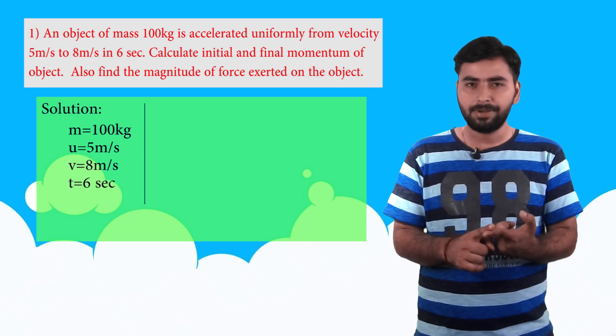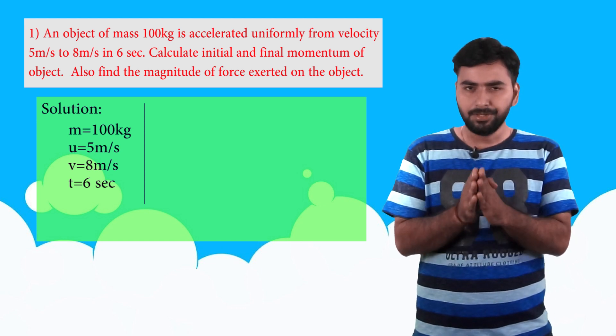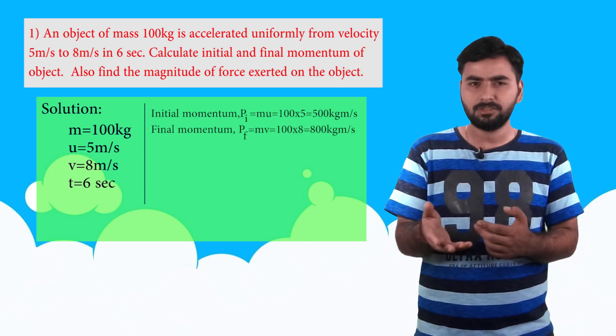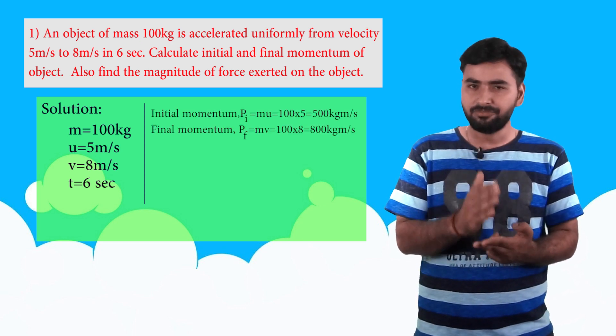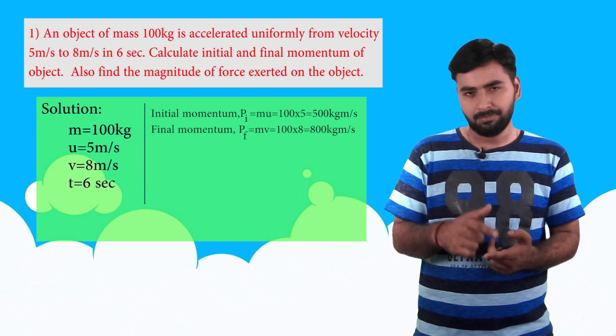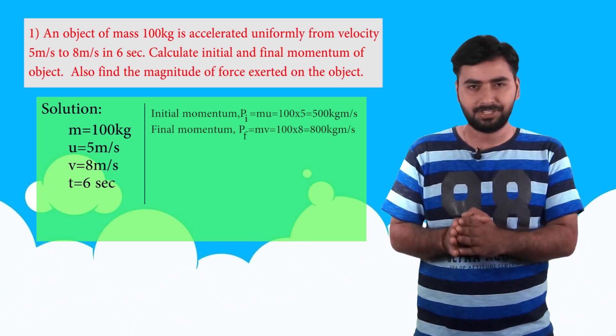Here we need initial momentum, final momentum and force. No problem, momentum is mass into velocity. So initial momentum is mass into initial velocity, that is 100 into 5, which is 500 kg meter per second. Final momentum is mass into final velocity, that is 100 into 8, which is 800 kg meter per second.